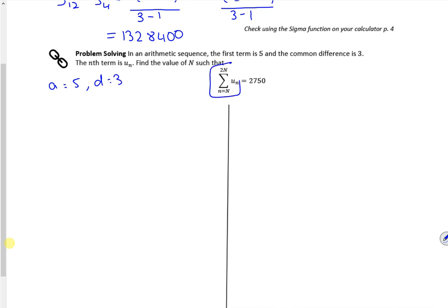I want from the sum of n to 2n. So if you imagine going from the first term to 2n, that's the sum of the first 2n terms. But I want from the nth term, so this is the bit I want, so I need to chop off from the n minus 1. So I'm going to do it as the sum of 2n minus the sum of n minus 1, and that's equal to 2750. Let's stick the formulas in then.